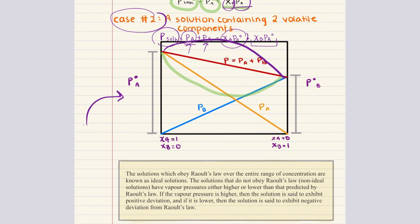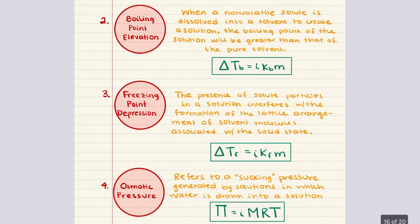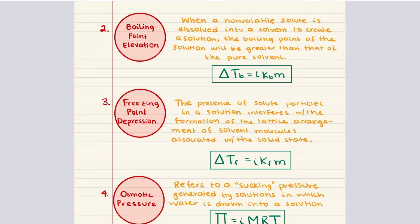Understanding these two cases and the concept of ideal versus non-ideal solutions is crucial for predicting the behavior of solutions in various chemical processes. This lowering of vapor pressure has significant effects on other colligative properties such as boiling point elevation and freezing point depression, which we're going to get into next.